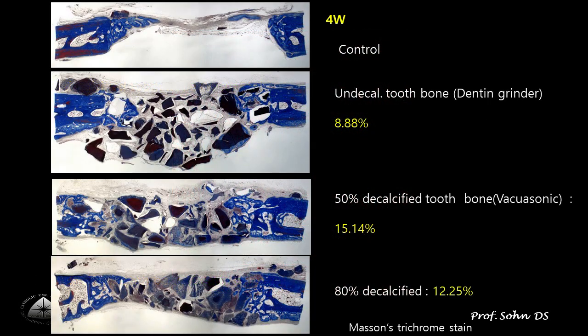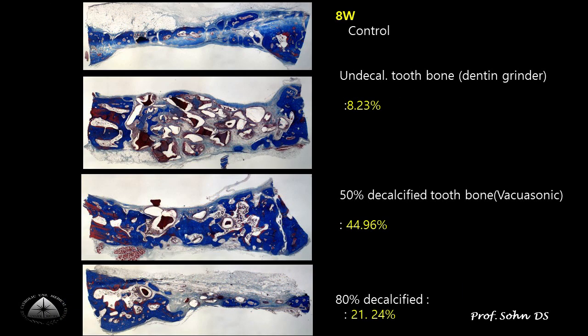After four weeks of healing, 50% decalcified dentine showed the highest new bone formation compared to other groups. After eight weeks of healing, 50% decalcified tooth bone showed the highest new bone formation compared to any other group. Decalcified dentine revealed significantly higher new bone formation compared to undecalcified dentine and 80% decalcified dentine in this study.